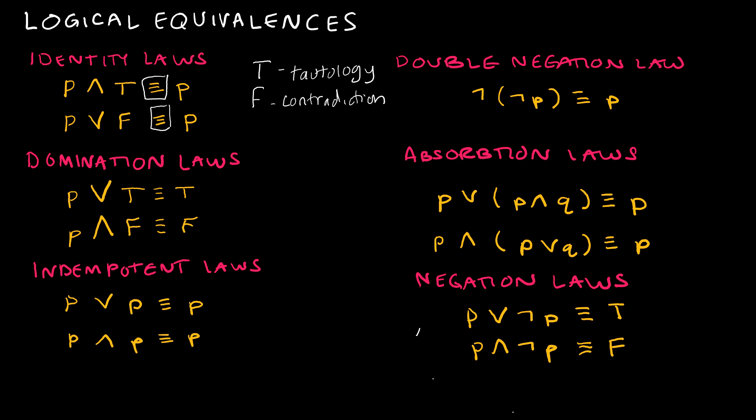The double negation law, this one's pretty straightforward, we already talked about, not not P is equivalent to P. The absorption laws, if we have P or P and Q, it's equivalent to P. Or we have P and P or Q, it's equivalent to P. And then the negation laws.